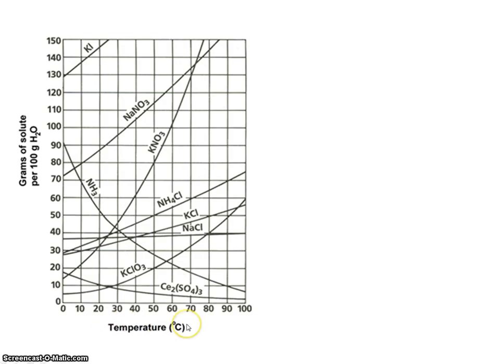On the x-axis we have temperature, and on the y-axis we have grams of solute per 100 grams of water. And when it says grams of solute, the solute we're talking about are all of these: potassium iodide, sodium nitrate, ammonia. So basically, how much solute can we dissolve in 100 grams of water? That's what these lines tell us.